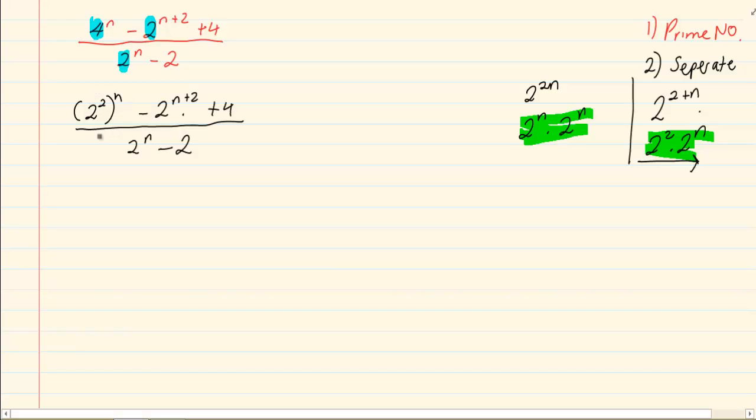Let's continue with our sum. This bracket now becomes 2 to the power of 2n minus 2 to the power of n times 2 to the power of 2. What I am doing is I am separating. Plus 4 all over 2 to the power of n minus 2.